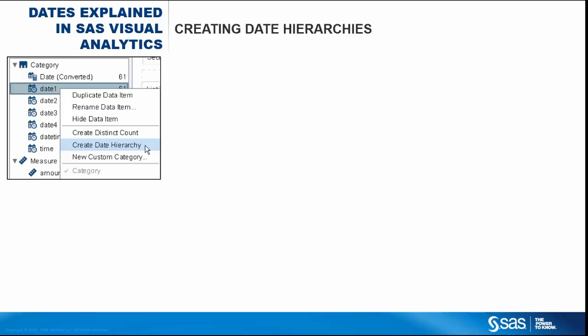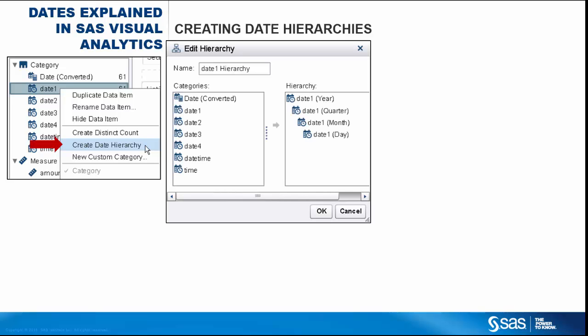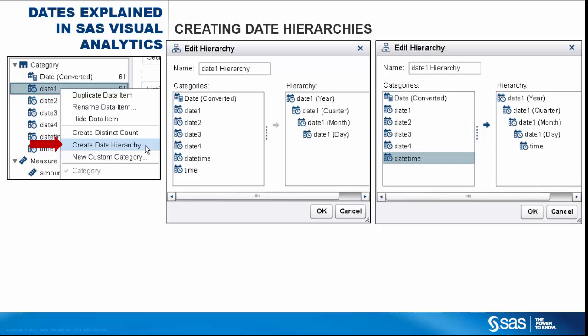In Designer, you can create a default date hierarchy from any date or date-time data item whose format displays a year, by simply right-clicking on the data item and selecting the Create Date Hierarchy option. A date hierarchy consists of year, quarter, month, and day. The hierarchy shown here is the default hierarchy for the Date 1 data item, but you can always add additional data items to the hierarchy if you wish, such as the time data item.